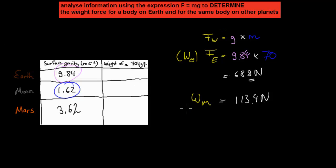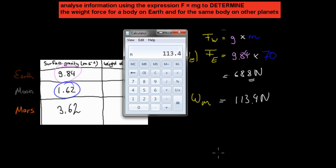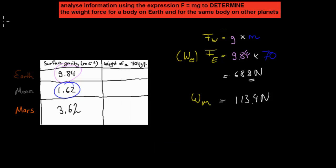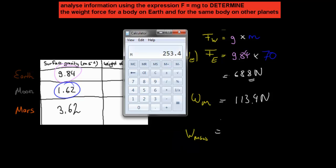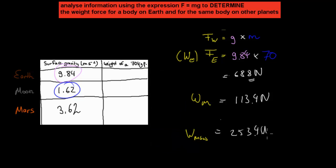And then for Mars, we have the same values, except now we have the same mass, so the mass doesn't change, but we have 3.62 instead of 1.62. That gives us, so our weight on Mars is going to be different again, and it's going to be 253.4 Newtons.